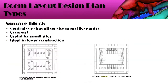Next is the square block room layout, wherein there is a central core and rooms are on all sides. All services such as the floor pantry and other ancillary areas are toward the central core. This style is very compact, useful for small sites where land space is limited, and is ideal for tower-style or high-rise construction.